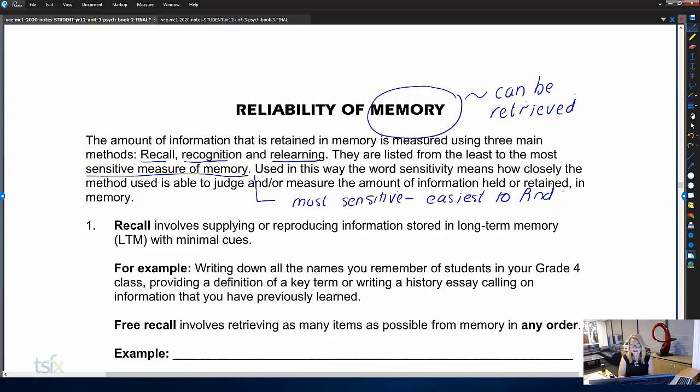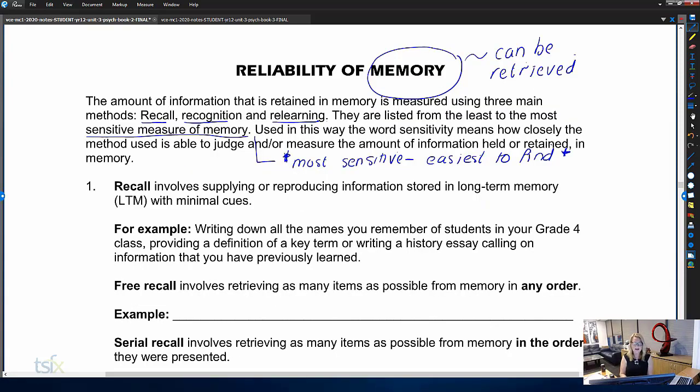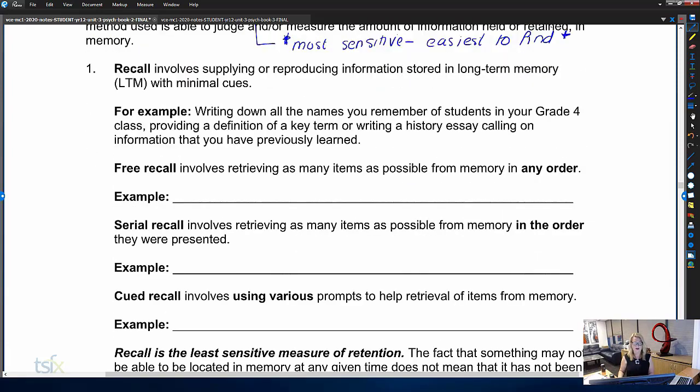Think of a little search engine inside your brain trying to find something. The most sensitive is the easiest to find. They're listed from the least to the most. We'll talk about each one and then come back to this because this is one of those tricky little concepts. Recall just involves recalling information - remembering it. For example, if I got you to do a free recall task, a classic one is you might remember Snow White and the seven dwarfs.